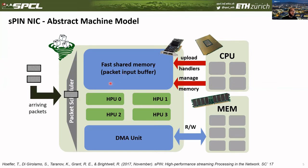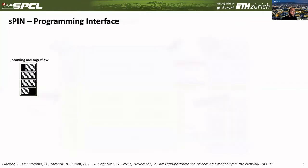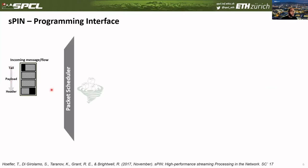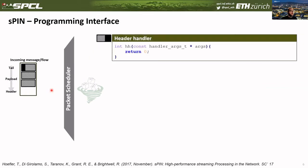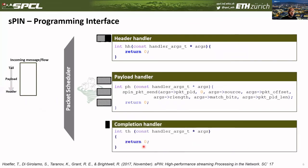As data arrives from the network, it gets written to the packet input buffer, and then the packet scheduler assigns the packets to the different HPUs, where the handlers are executed. The handlers can either consume the data or write it back to host memory. The programming model defines three types of packets given a message: the header packet, a set of payload packets, and a final completion or tail packet. The packet scheduler triggers different handlers according to the packet type: header packets are processed by the head handler, payload packets by the payload handler, and the last packet by the completion handler.